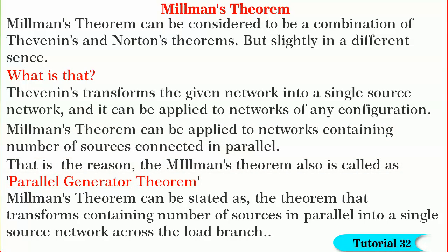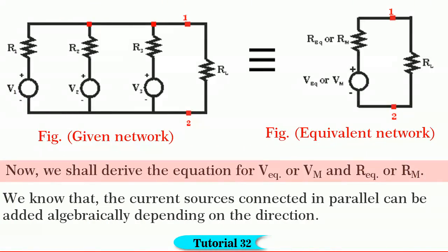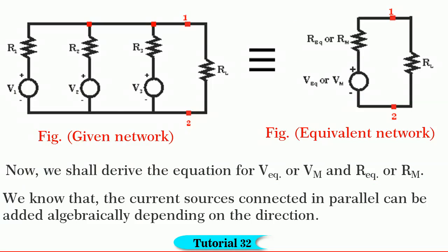Both Millman's and Thevenin's theorems transform the given network into a single source network — in this sense, both can be considered the same. Millman's theorem transforms a network in which a number of sources are connected in parallel into a single source network across the load branch. To derive the equations for V equivalent (or Vm, which I call Millman's voltage) and R equivalent (or Rm, Millman's resistance), consider the network shown in figure.